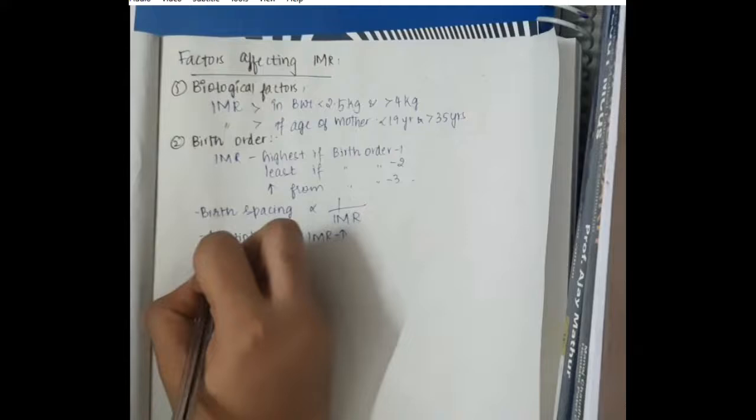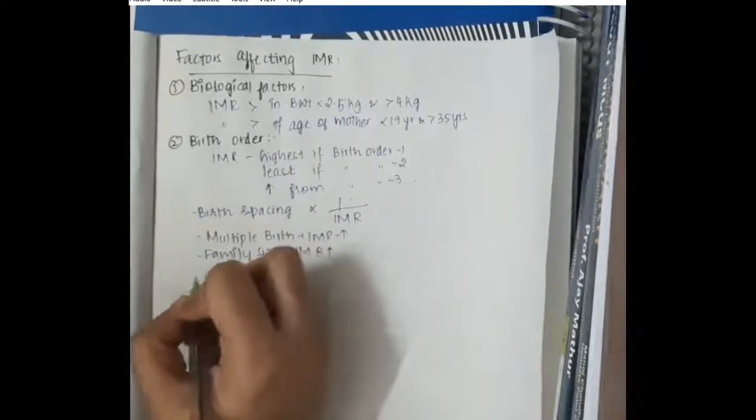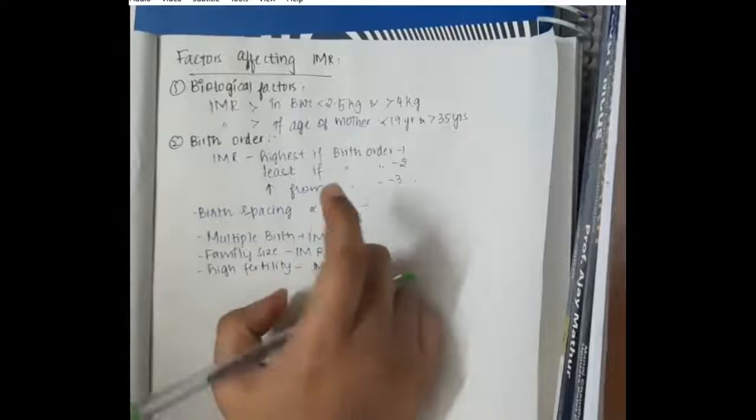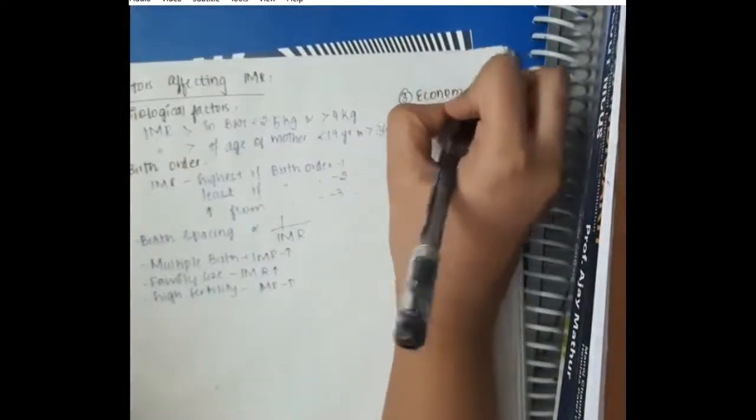So, more the birth spacing, lesser is the infant mortality rate. Then, in multiple births, infant mortality rate increases. Infant mortality rate increases in higher family size and in higher fertility, which is in multiple births obviously.